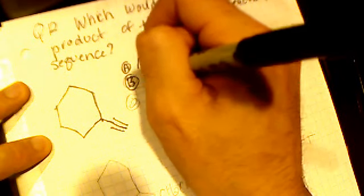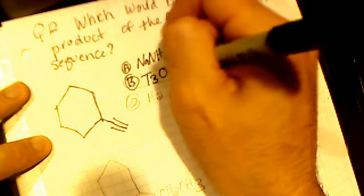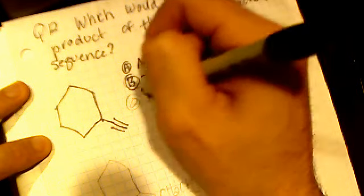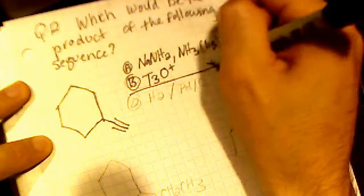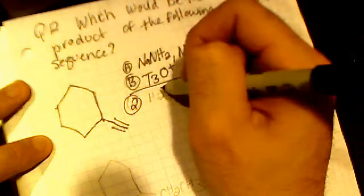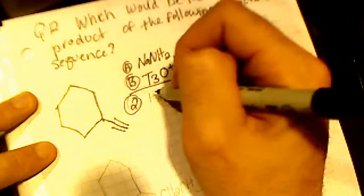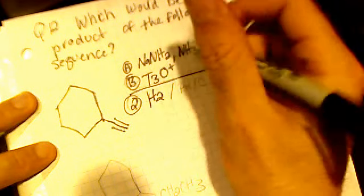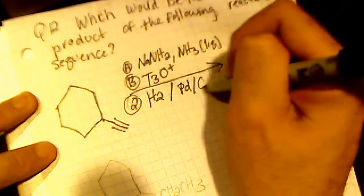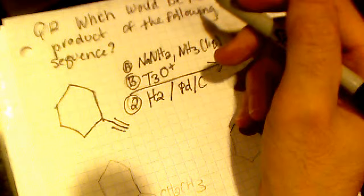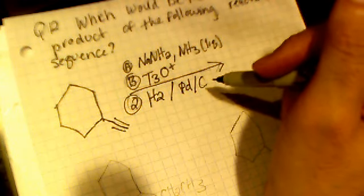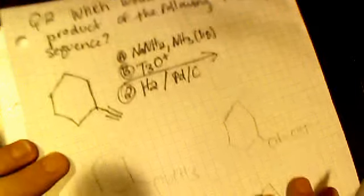Then we're going to treat it with an oxygen with three tritiums attached rather than three hydrogens. And then third, we're going to treat it with hydrogen and Pd/C, which is a hydrogenating catalyst that breaks double bonds and triple bonds and puts hydrogens on the carbons.